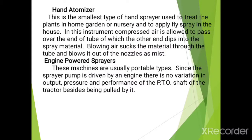The next type of sprayer is the hand atomizer. This is the smallest type of hand sprayer, used to treat plants in a home garden or nursery and to apply spray in houses. In this instrument, compressed air is allowed to pass over the end of a tube whose other end dips into the spray material. Blowing air sucks the material through the tube and blows it out through the nozzle as a mist.